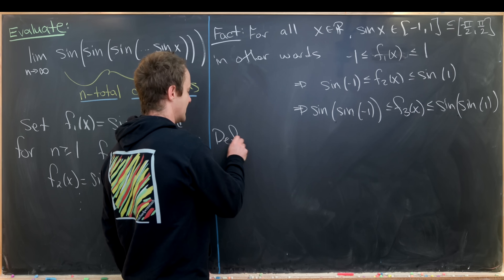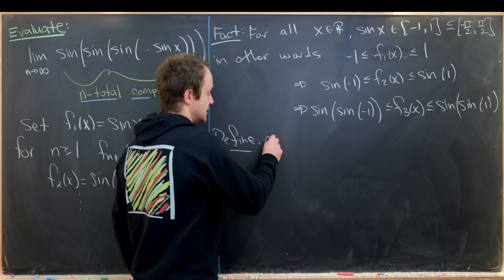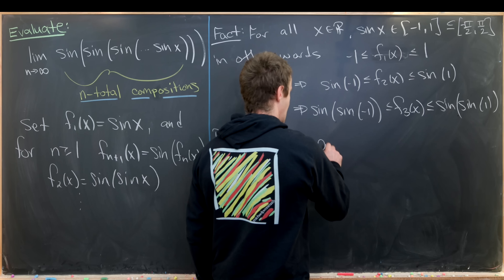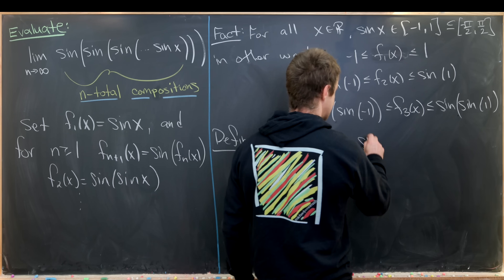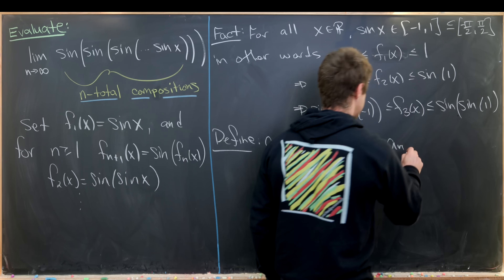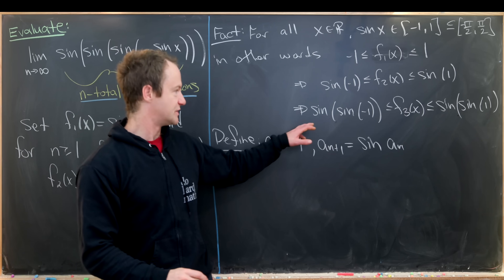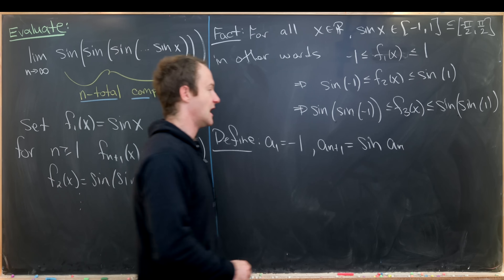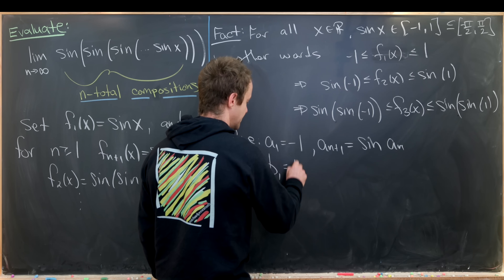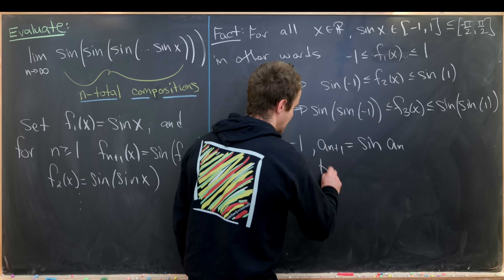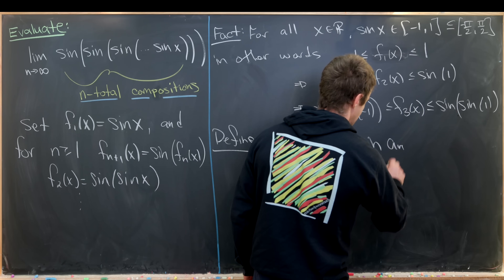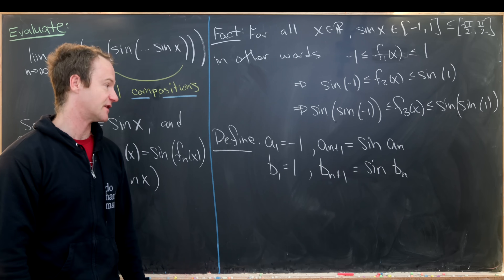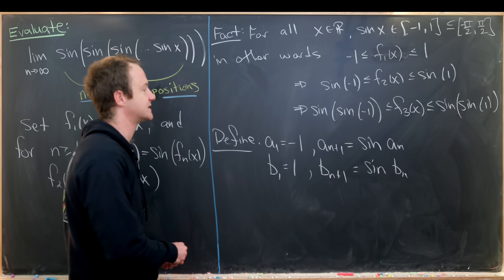That motivates us to look at two sequences: n compositions of sine evaluated at -1, and n compositions evaluated at 1. We define a₁ = -1 with aₙ₊₁ = sin(aₙ), producing the left-hand side of the inequality. And we define b₁ = 1 with bₙ₊₁ = sin(bₙ). We'll show that each of these converges using the monotone sequence theorem.